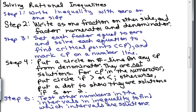We're going to mark those critical points on a number line. Here's the difference: we're going to put a circle on the number line for any critical points from the denominator, because those are not solutions — it would make the fraction undefined. For critical points from the numerator, we'll put a circle if we've got strictly greater than or strictly less than. But if it's less than or equal to, or greater than or equal to, those will be solutions and we'll put a dot.